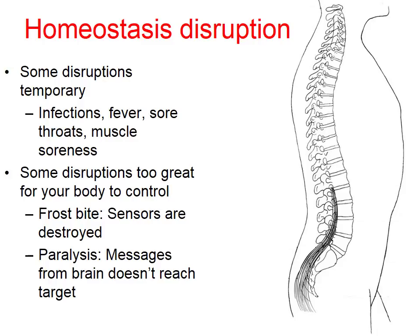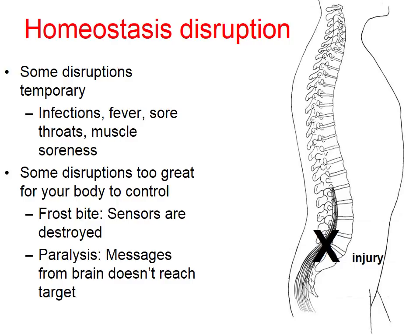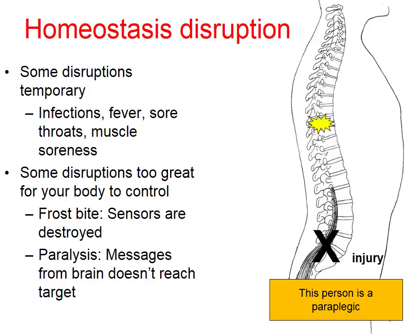We can even see major disruption that leads to paralysis — where messages from the brain never reach the target. Normally the brain sends a signal all the way down to the feet, allowing you to walk or kick or climb steps. But if there's an injury, let's say at a specific location on the spine from an automobile accident, the brain can still send a message, but the message never gets past the injured site. This is an example of a paraplegic — the person wouldn't be able to move below their waist. You can put an ice cube on their foot, but the signal never reaches the brain, and the brain's signal to wiggle the toes never gets through.